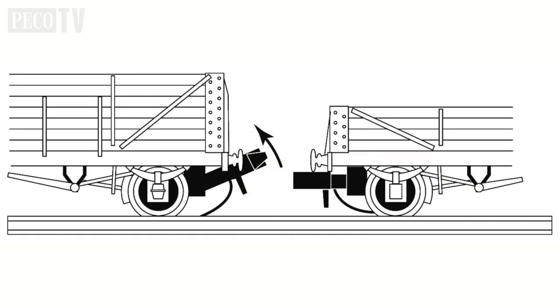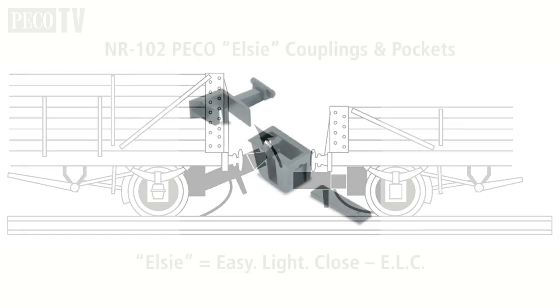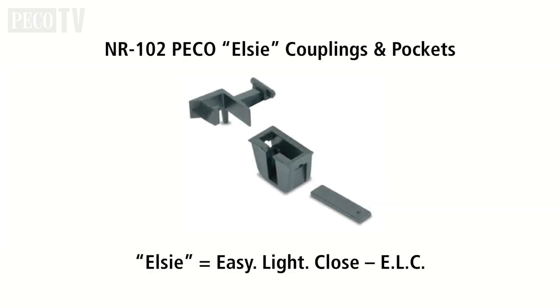This system is designed specifically for use with Peco quality line, ready-to-run and kit-built N-Gauge models using the unique Peco LC, or sometimes known as ELC couplers, which means easy, light and close coupling.